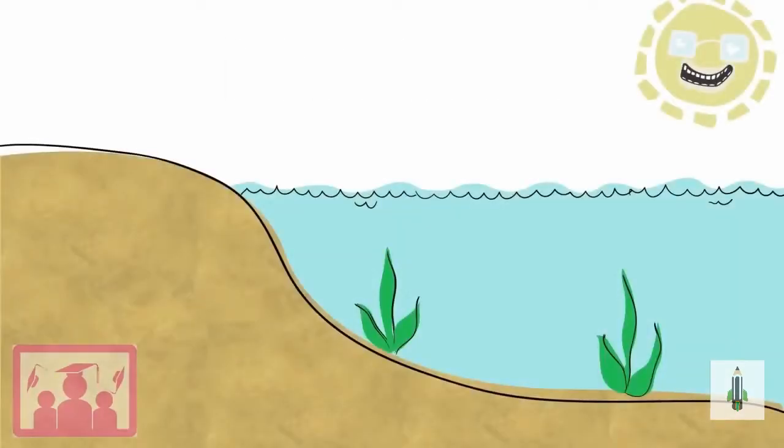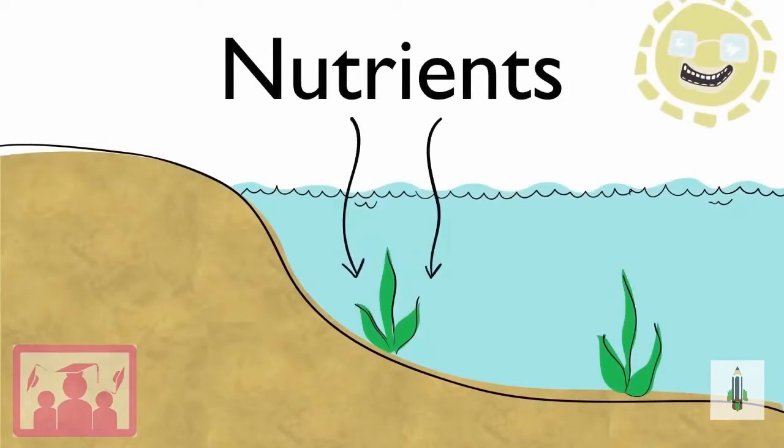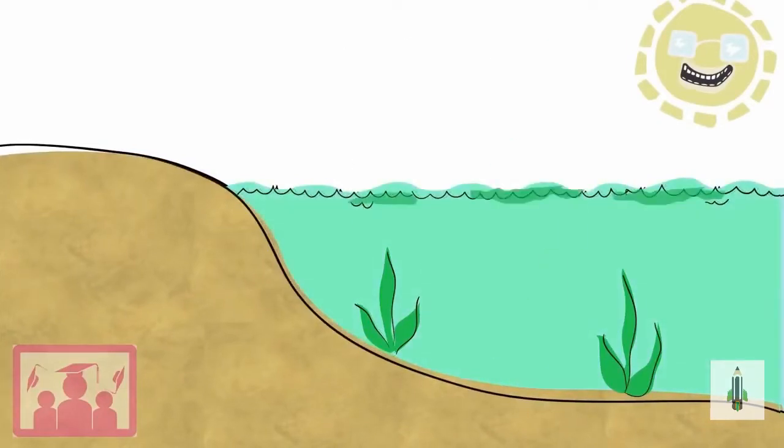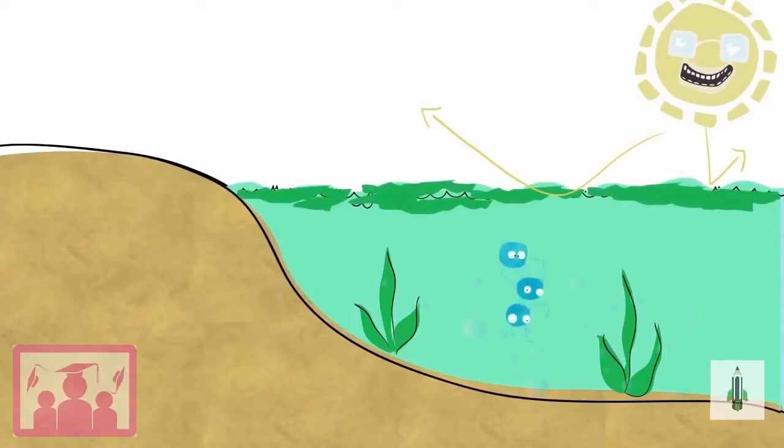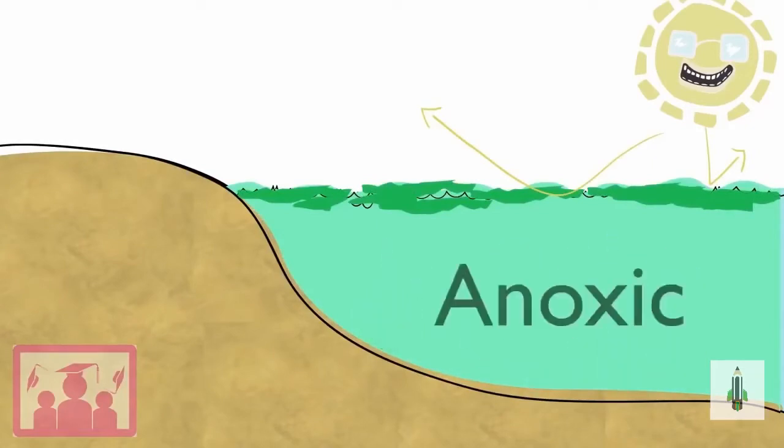So eutrophication happens when nutrients are added to water, which causes an algal bloom, cutting off sunlight and feeding bacteria. The bacteria use up the oxygen in the water, and it becomes anoxic, causing everything living in the water to die.